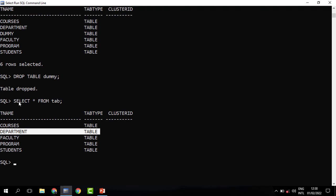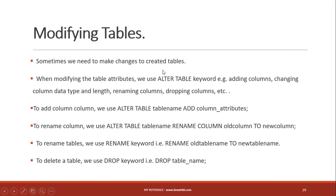Those are some of the operations we can do when modifying a created table. To summarize: we use ALTER TABLE whenever we are dealing with table attributes — for example, adding columns, changing column length, and more. We can rename tables using the RENAME keyword, and delete them using DROP TABLE. That's all for this episode — in the next part of the series we're going to learn about data manipulation. Let's meet there.